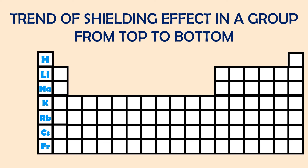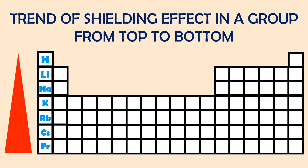As we have seen, the shielding effect in lithium is greater than hydrogen, and the shielding effect in sodium is greater than lithium. Hence the trend of the shielding effect is increasing from top to bottom in a group in the periodic table. The increasing trend is shown by the red triangle in the animation.